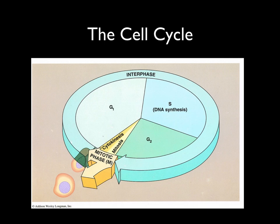Growth phase 1 is the most variable of the phases in terms of length — some cells move through it quickly, others more slowly. After a cell moves through growth phase 1, it enters the S phase where DNA is synthesized. After DNA is synthesized, the cell moves into growth phase 2. In growth phase 2 the cell is growing and replicating cytoplasmic constituents, and also producing important proteins and enzymes necessary for the cell to move from interphase into the mitotic phase.